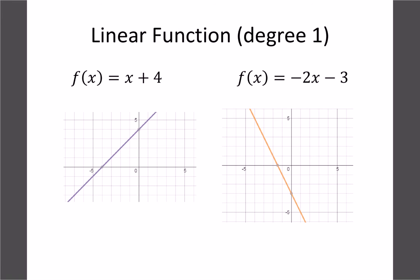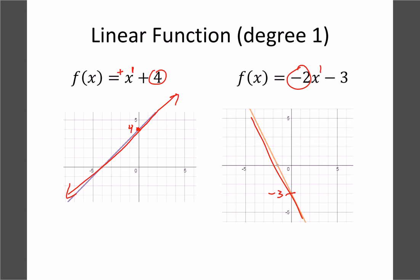The next one you should recognize from math 10: a linear graph has a degree of one. The constant is four, so that's our y-intercept. Because the coefficient is positive one, it's going to have a slope in the positive direction. Over here we've got a slope of negative two, so that line goes the other direction, and the negative three is our x-intercept. If we had y equals four minus x, the degree is still one and the leading coefficient is negative, so it goes through four with a negative slope.